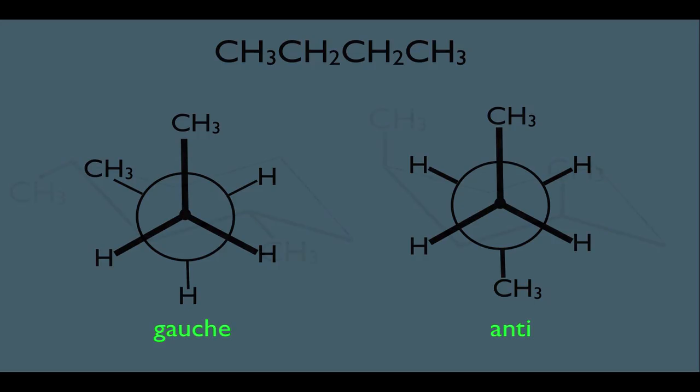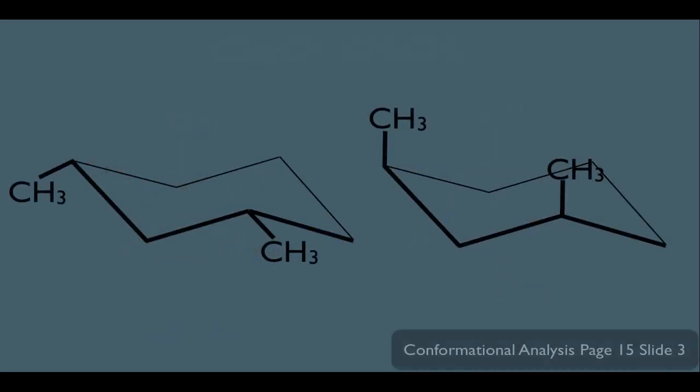Let me show you a few more examples. These two molecules are also conformational isomers to each other. They're both cis-1,3-dimethylcyclohexane. The structure on the left has methyls on carbons 1 and 3, both pointing in the downward direction, making the methyls cis to each other.